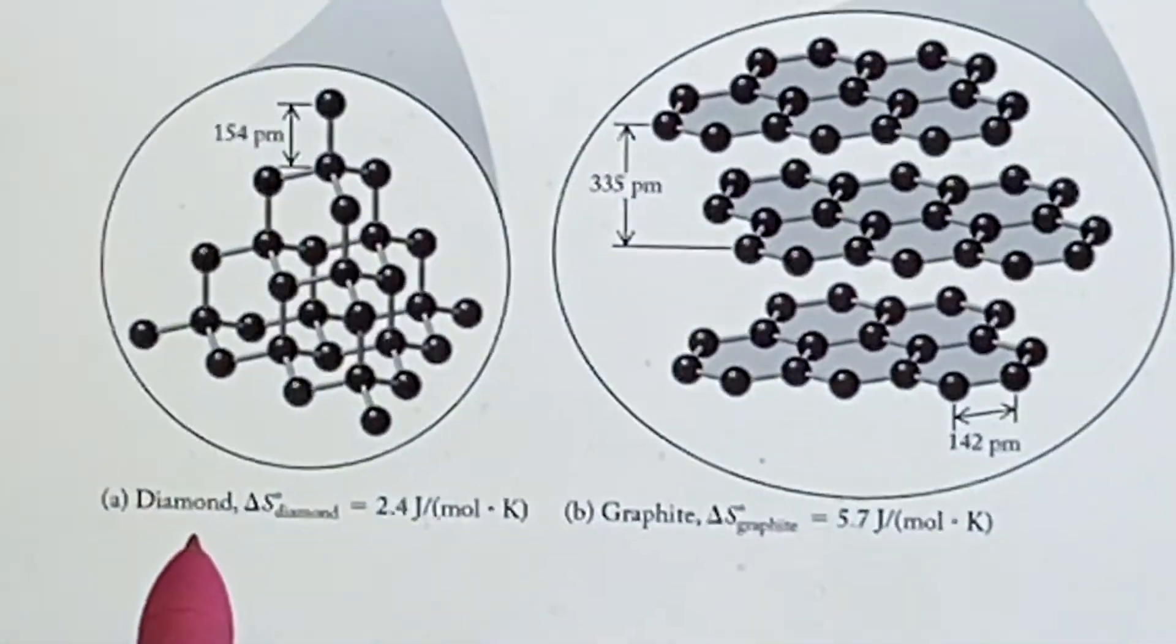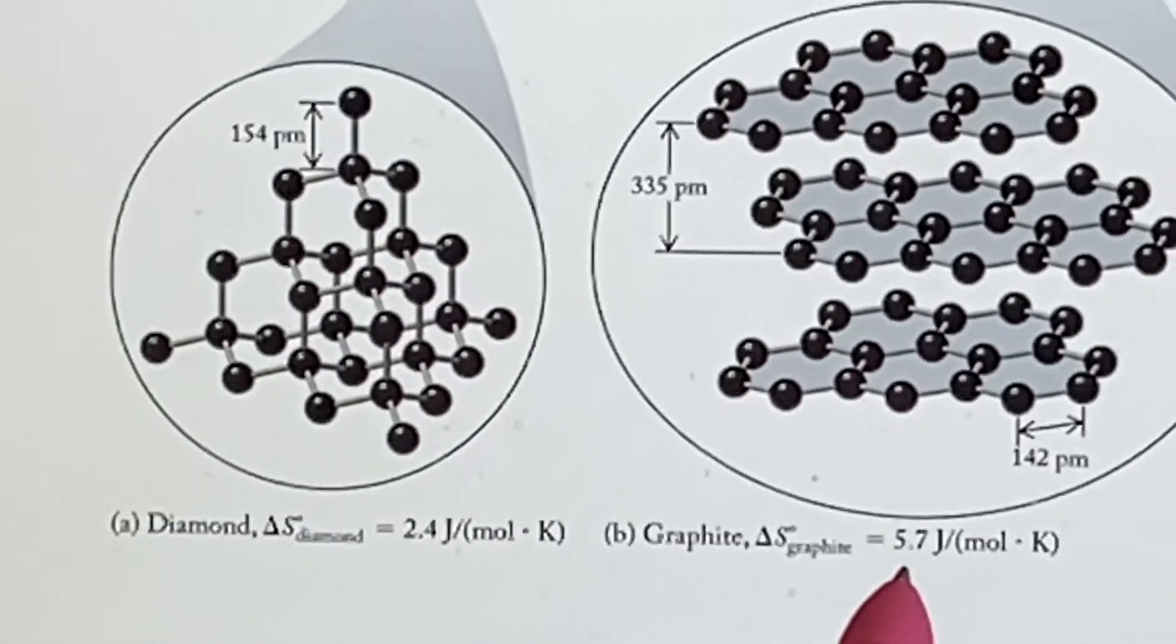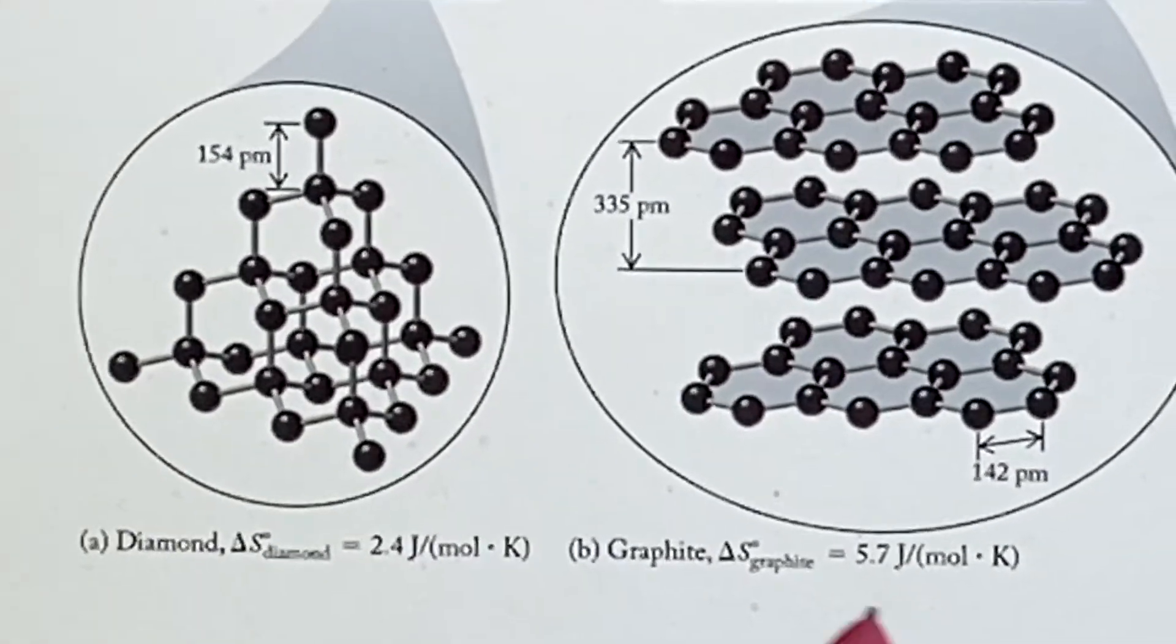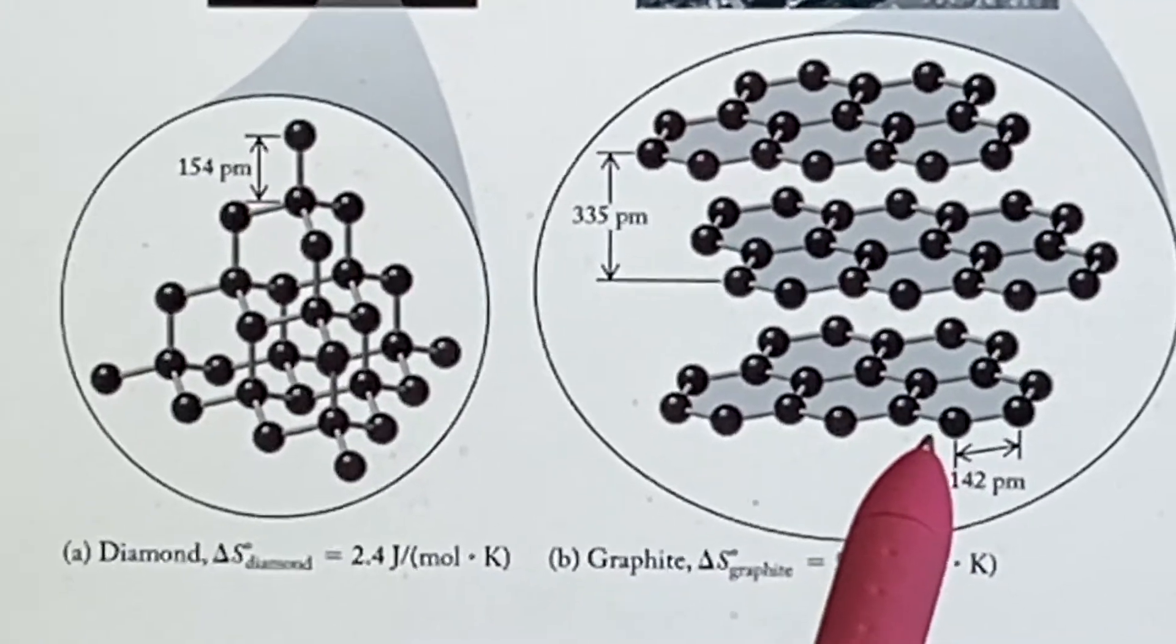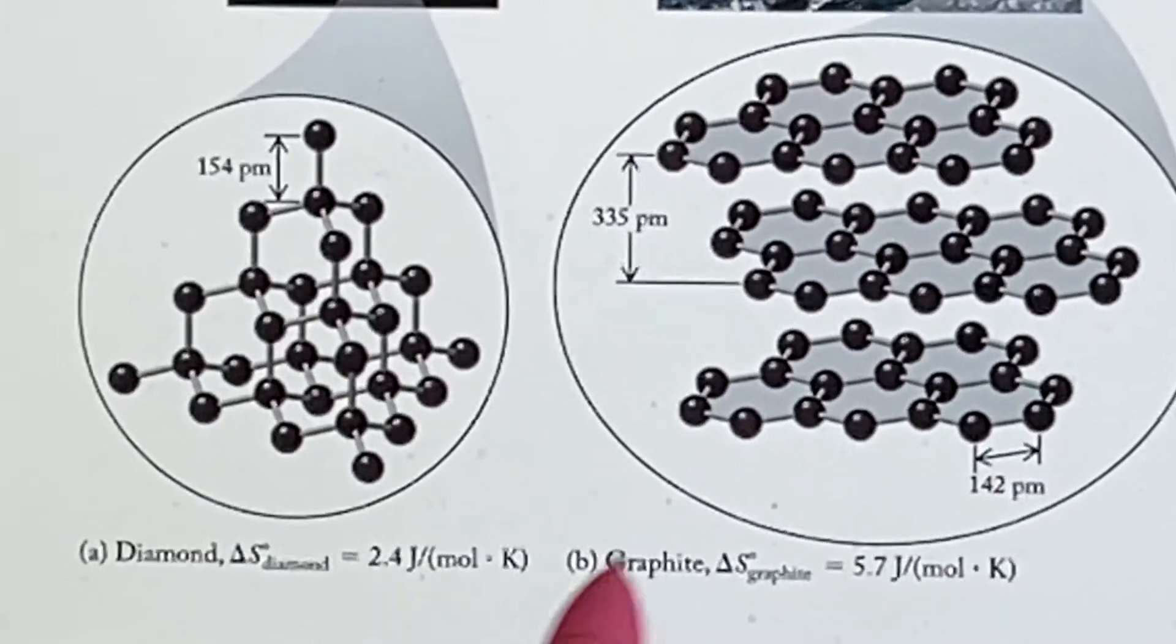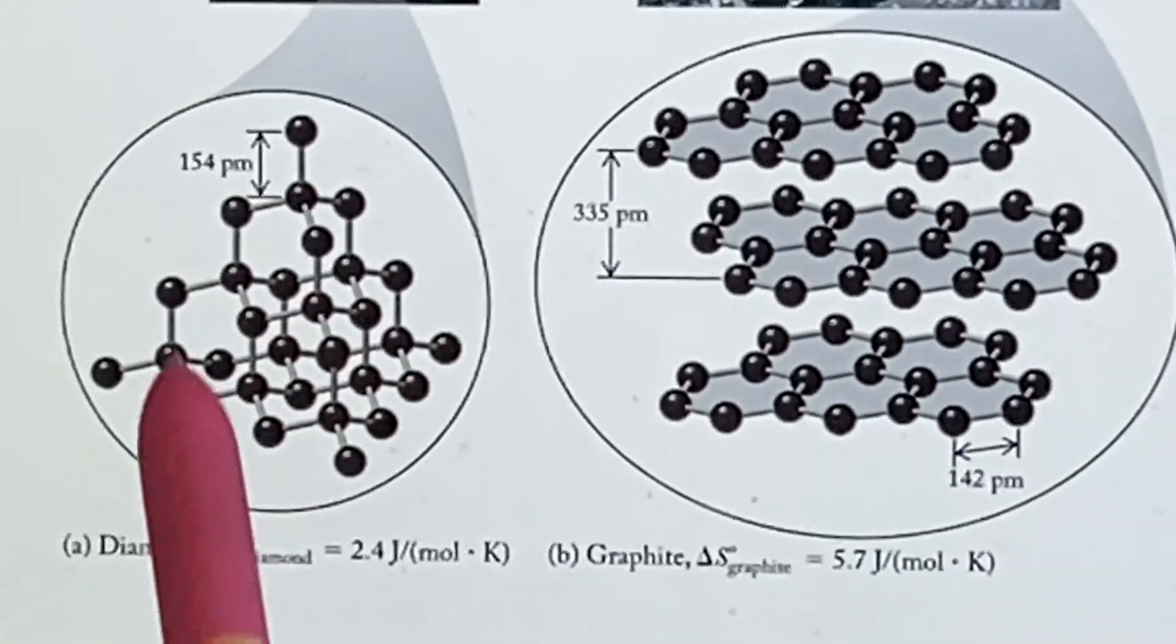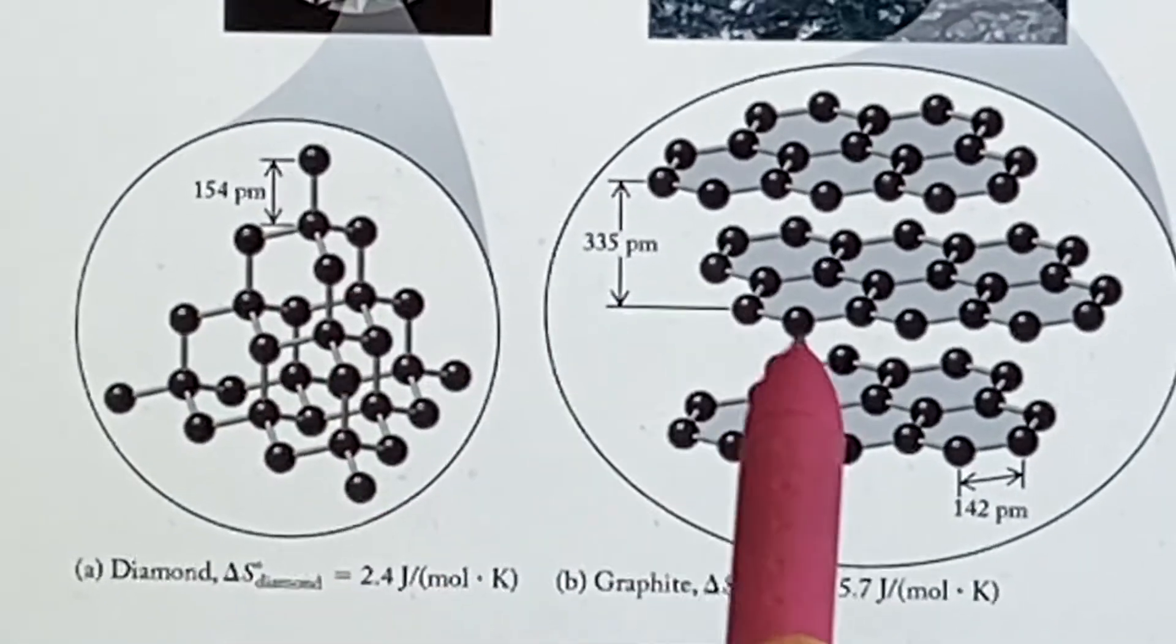And it turns out that if you look at the standard molar entropy for these, you would find out for diamond is 2.4 joules and for the graphite is 5.7 joules per mole kelvin. This has a higher one, higher entropy. That means this diamond would like to change into graphite, but it's a very small difference between them. You would have to go to significant effort to break these bonds in order to allow it to be capable of making these new ones.